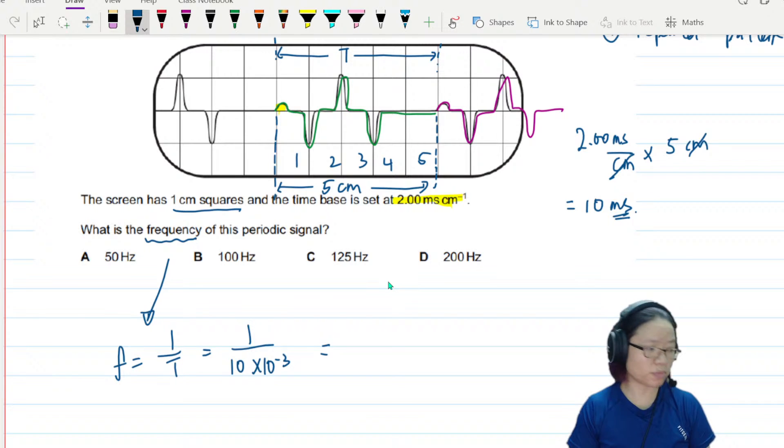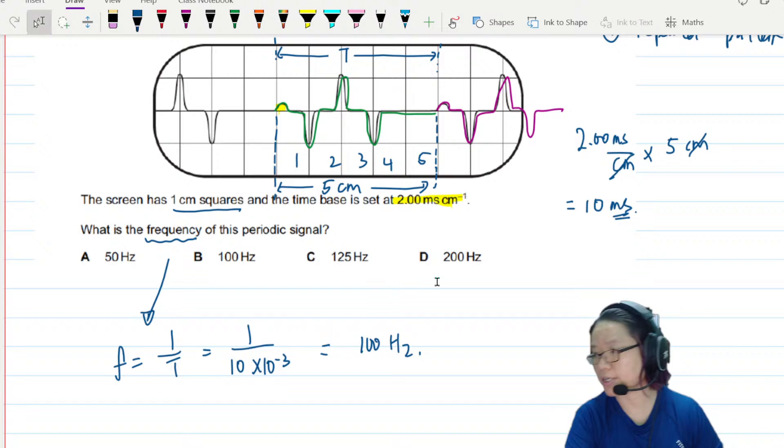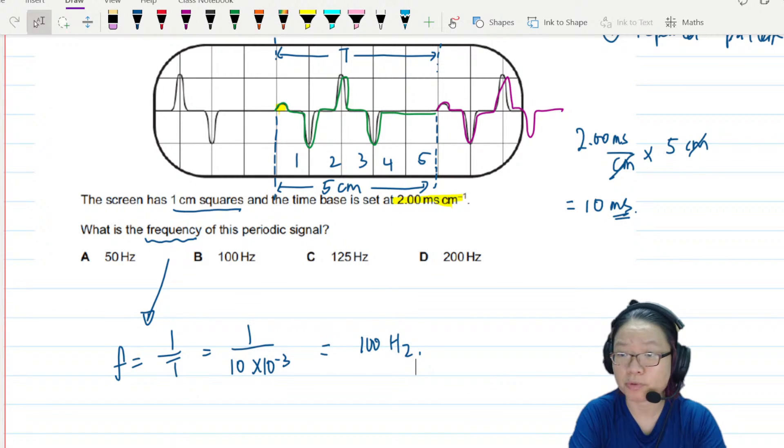From here you'll be able to get the answer, which is 100 hertz. So this is how you read the CRO—you find the repeated pattern.